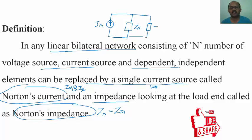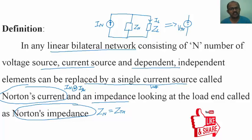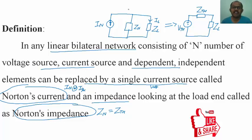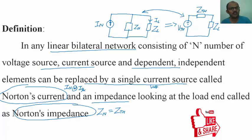At last you connect a load impedance in parallel. To find load current IL, apply the current divider rule. This is dual to your Thevenin circuit, which has a single voltage source VTH in series with impedance ZTH and a load impedance ZL. The Thevenin circuit is dual to Norton's circuit.